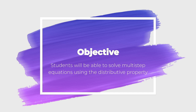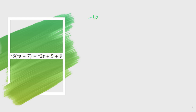It'll be a step further than what we did earlier this week, so there'll be a couple extra steps mixed in there. Jumping right in, we have the equation: negative 6 times the quantity negative s plus 7, equals negative 2s plus 5 plus 9. That's a lot of steps! The first thing I'm going to do is draw my line so I can keep everything separate.